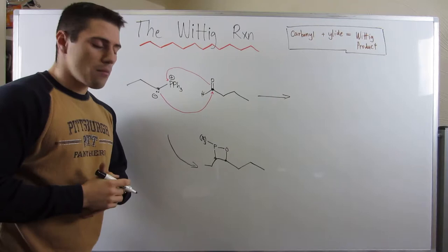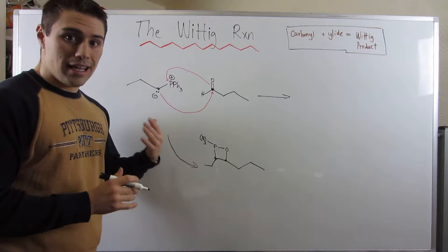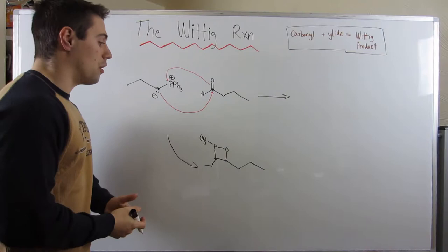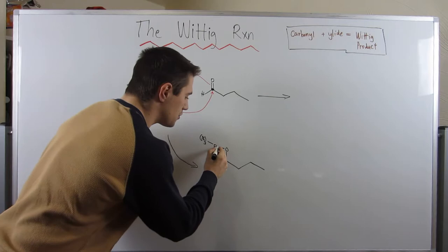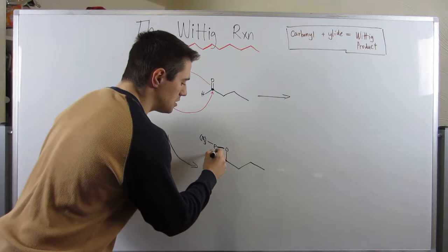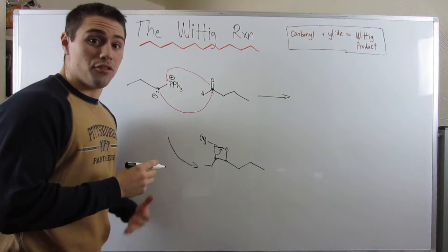So, you always form this kind of square intermediate in your Wittig reactions. And really, there's only one more step of arrows we have to show. So, here's kind of what happens.